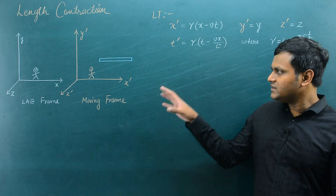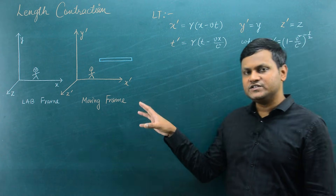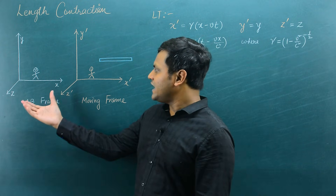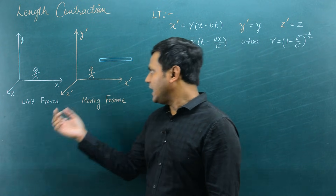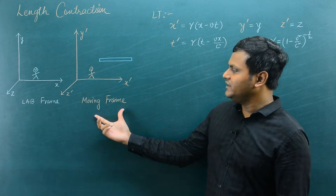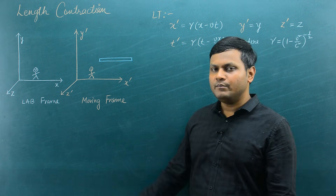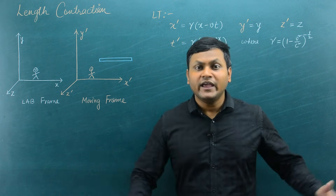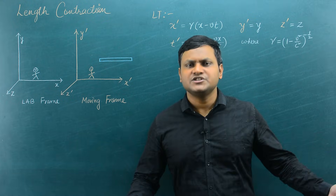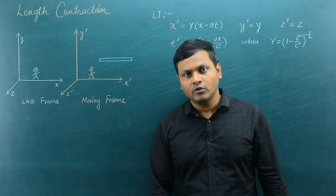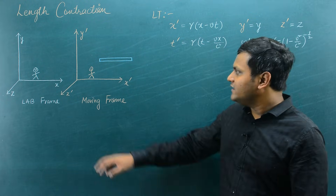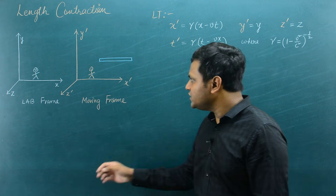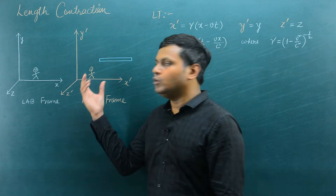And we can derive the formula of length contraction using the Lorentz transformations by taking a very simple setup. So this setup shows the relative motion between two observers. Let's suppose I have an observer in the lab frame and another observer in the moving frame. The moving frame may represent a person inside a train or a spaceship which is moving with respect to the lab frame.